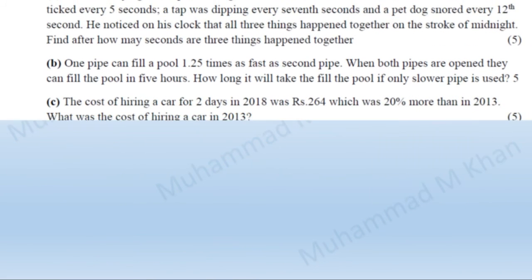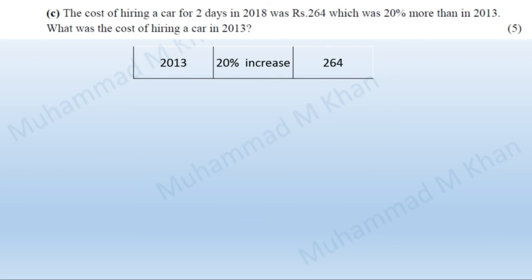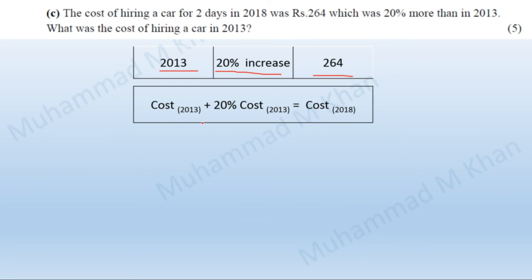Moving forward to the third part, it also involves the concept of ratio. The cost of hiring a car for two days in 2018 was 264. This 264 was after an increase of 20 percent over the cost of 2013 — meaning the cost of 2013 plus 20 percent gives the cost of 2018. In equation form: cost of 2013 + 20% of cost of 2013 = 264, and we need to find what the 2018 cost was in 2013.